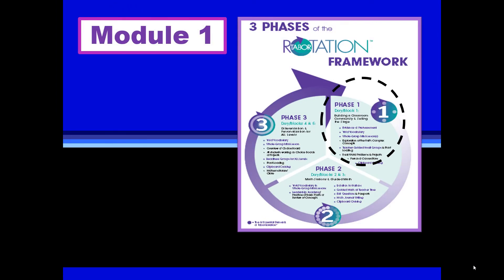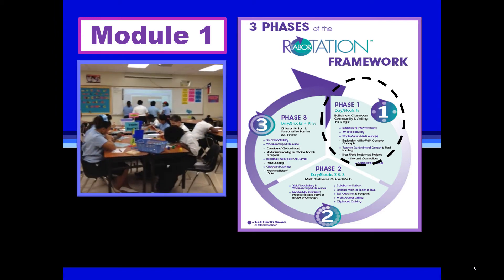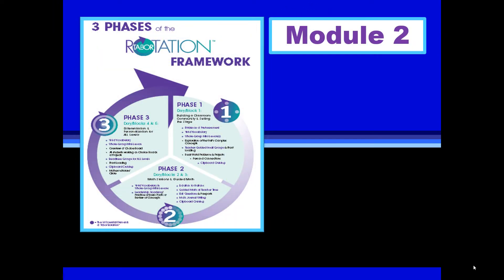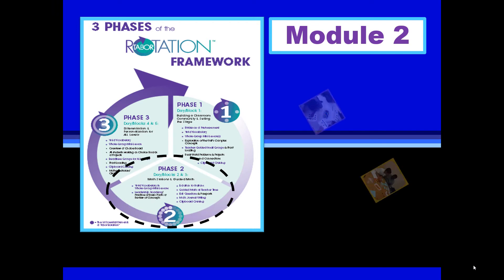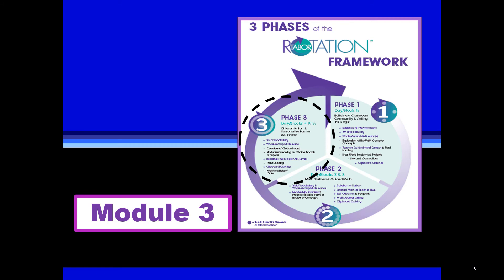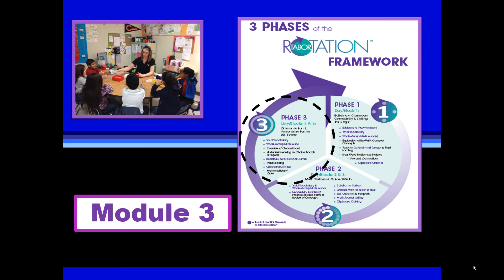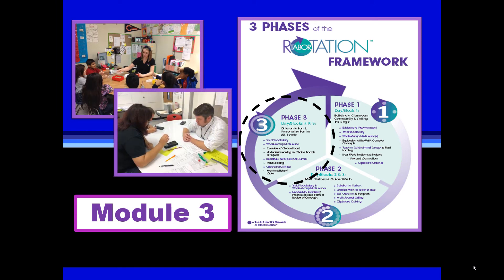Module 1 is all about Phase 1 of the Tabor Rotation framework and will help you set the stage for small group differentiated instruction and build a classroom community. Module 2 is focused on Phase 2 — varying the modalities at math stations, guided math, and rigor and relevance in math activities. Module 3 will help you understand and implement the strategies and essential elements included in Phase 3 of the Tabor Rotation framework.